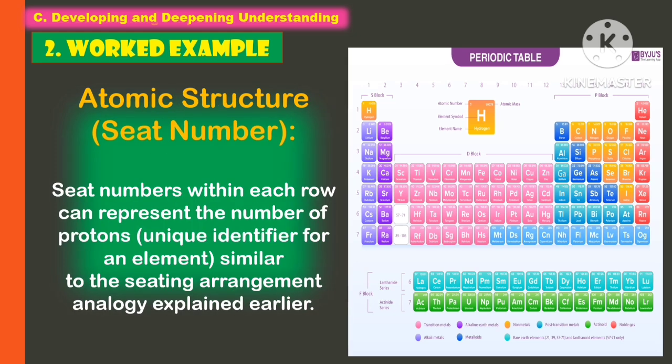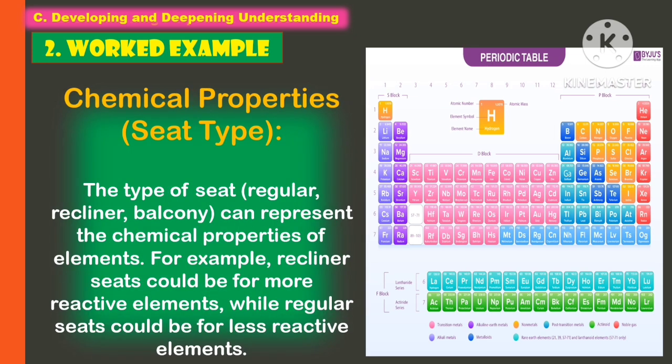Another analogy is the atomic number or seat number — seat numbers within each row can represent the number of protons, a unique identifier for an element, similar to the seating arrangement analogy explained earlier. Another one is chemical properties or seat type — the type of seat, such as regular, recliner, or balcony, can represent the chemical properties of the elements. For example, recliner seats could represent more reactive elements, while regular seats could represent less reactive elements.